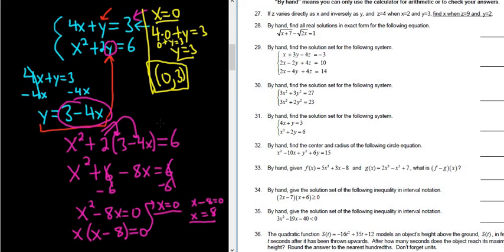Now we have to do the other value of x. So when x equals 8, we get 4 times 8, again plugging it into the first equation, plus y equals 3. So 32 plus y equals 3.